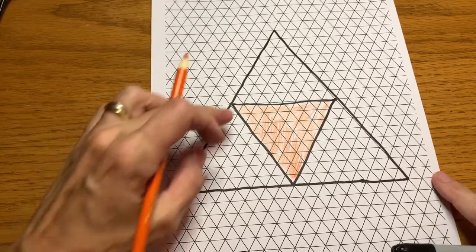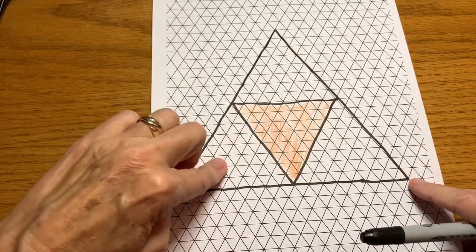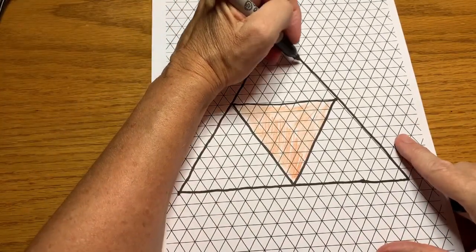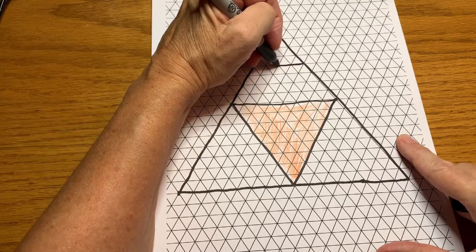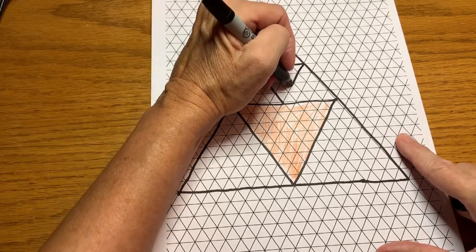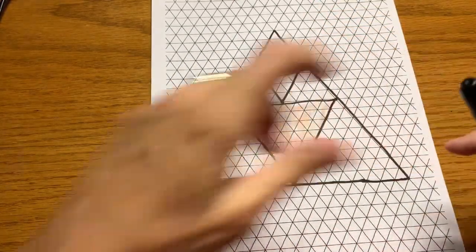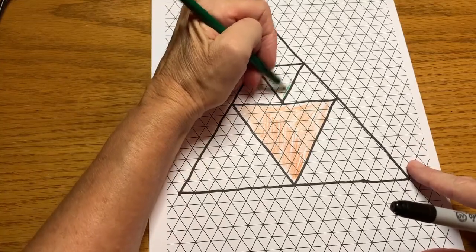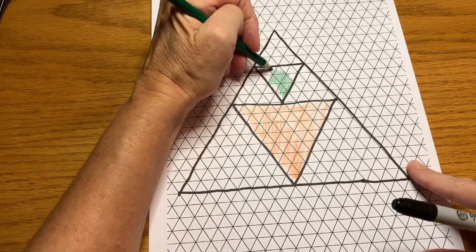All right, so now we have an 8 by 8 triangle. I've got three empty spaces, so in each of those I'll do a 4 by 4. So I count down 4, go across and down and down. I'm going to color in that middle one. I like to do all of the same size triangles the same color, but that's just my preference.